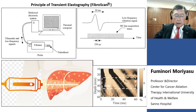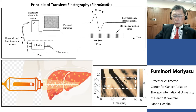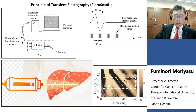This is the principle of transient elastography. A mechanical vibrator makes shear waves in the liver by pushing the skin of the intercostal space. The ultrasound M-mode traces the shear wave propagation and can measure its speed.